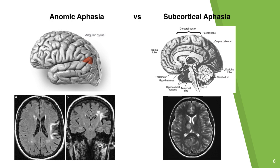While researching subcortical aphasia, I noticed similarities between subcortical and anomic aphasia, so I wanted to include a slide showing the difference. Both aphasias present very similarly in that naming ability is the main issue and other areas are relatively intact. The main way to determine the difference between the two is through brain imaging and locating the area of the lesion. For anomic aphasia, the lesion occurs in the angular gyrus, which is in the temporal parietal area and is more superior.